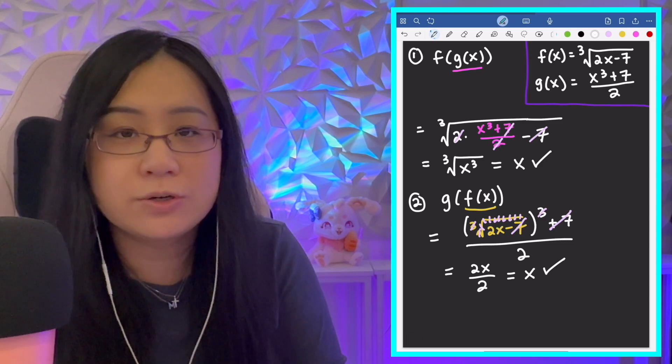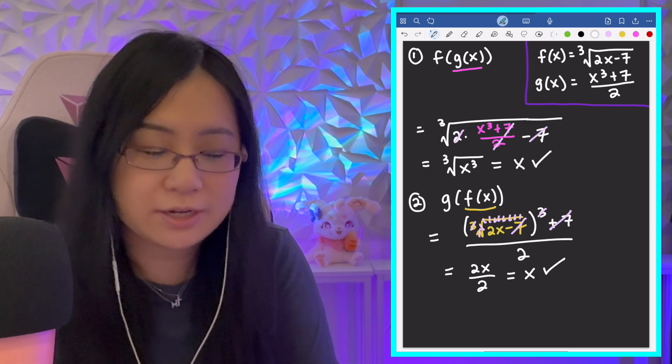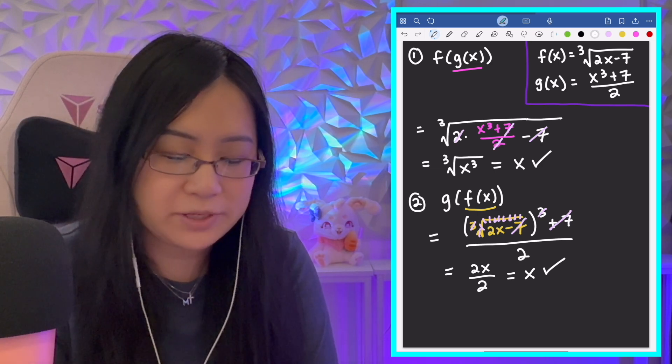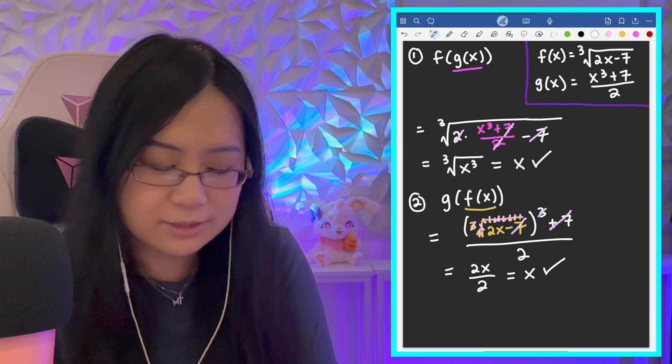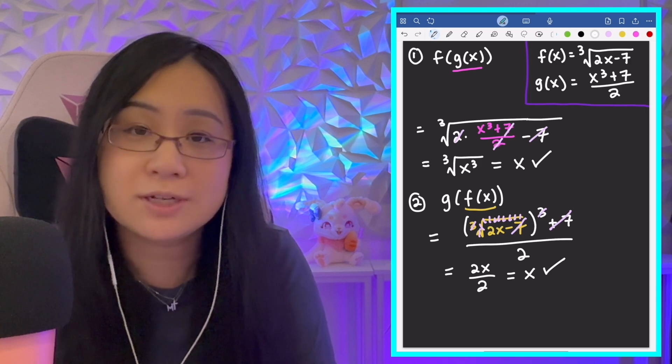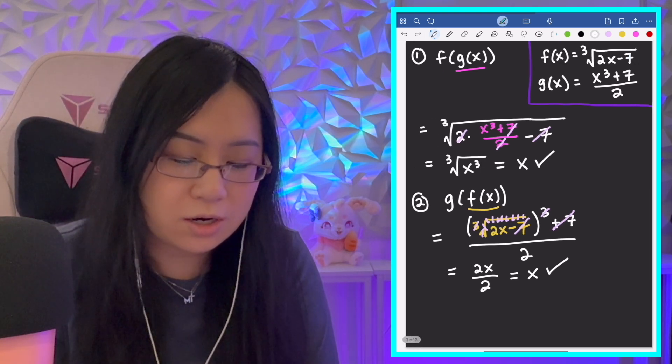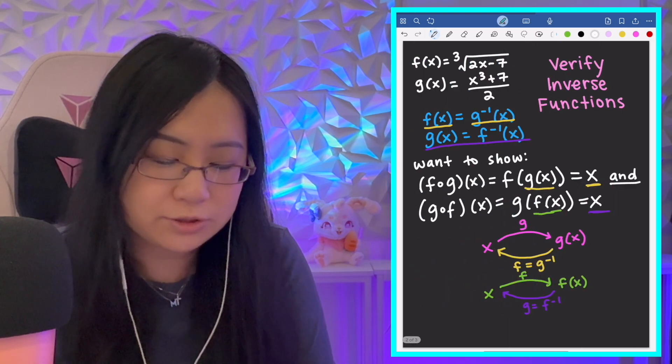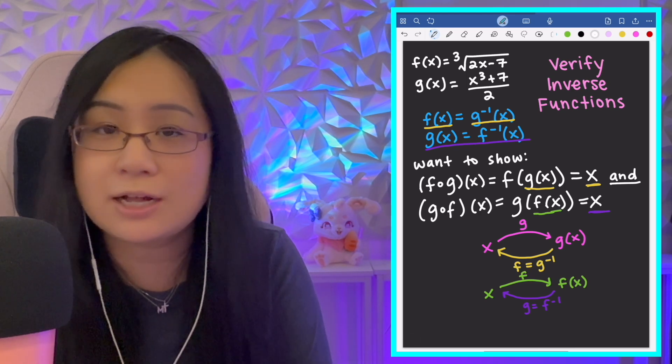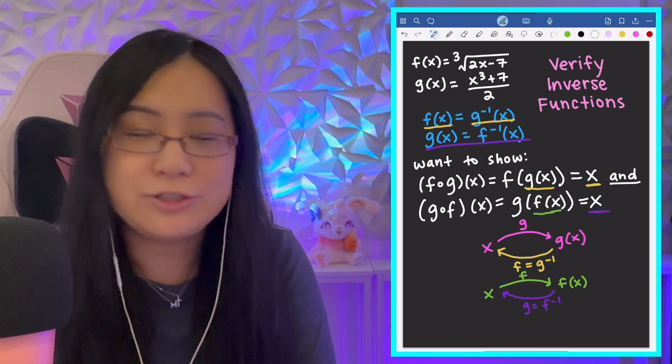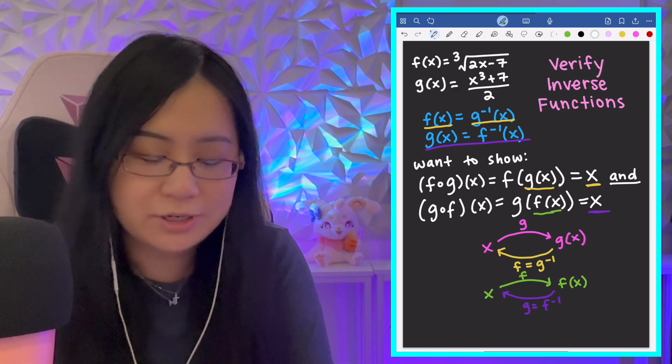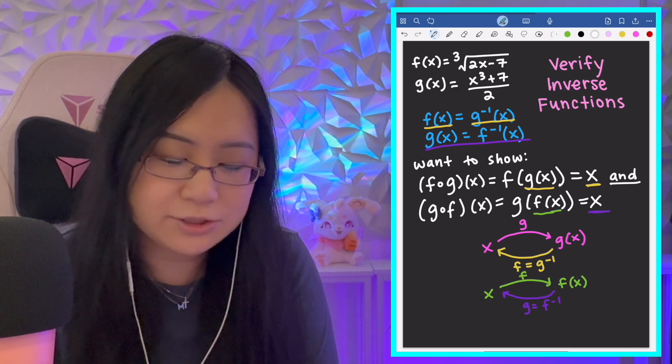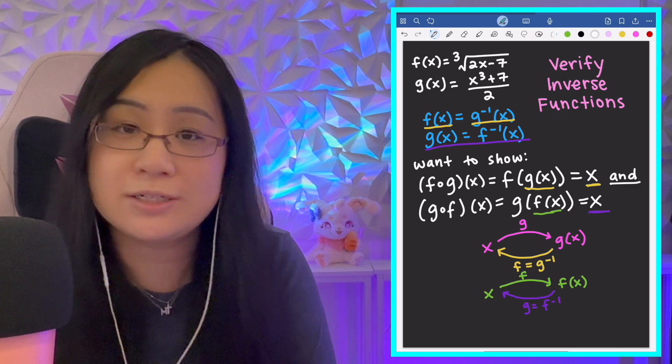So, now you can just say, therefore, or because f(g(x)) equals x, and g(f(x)) equals x, therefore, they are inverses of each other. So, that's the verification process algebraically. We're not worrying about domain or anything here. We're good to go, and this is just the algebra behind it.